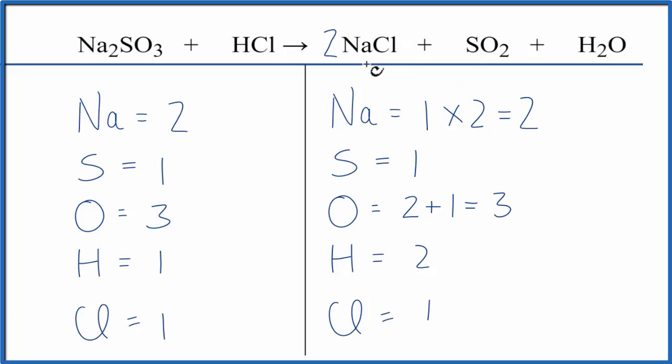Two applies to the whole NaCl, so we have one chlorine times the two. Now we have two chlorines. Let's fix the chlorines, because if we put a two in front of the HCl, one times two, now the chlorines are balanced.